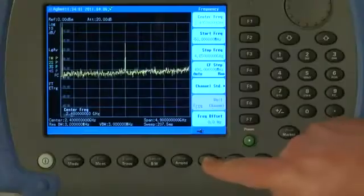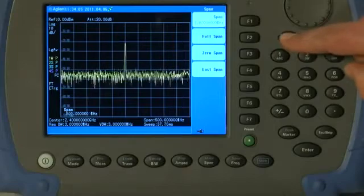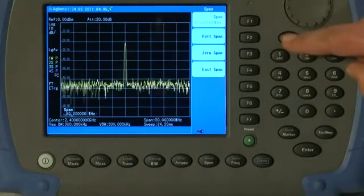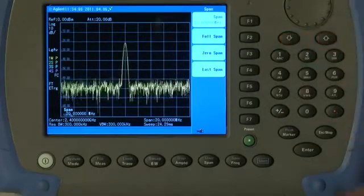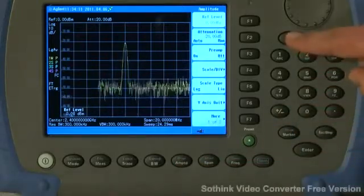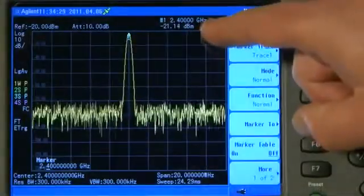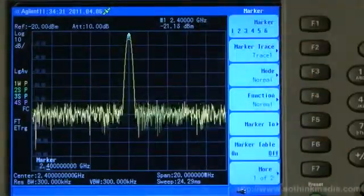I can then press the Span button and using the down arrow keys, I can zoom in on the signal and I can press the Amplitude button and change the reference level, again using the arrow keys to bring the signal to the top of the Graticule and then I can press the Marker button and I can read the amplitude value of the signal, approximately minus 20 dBm.